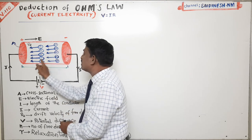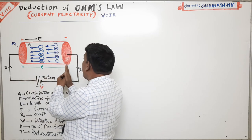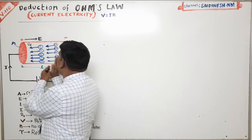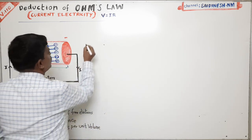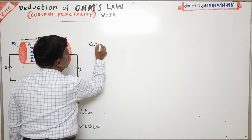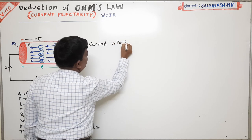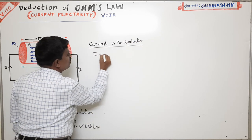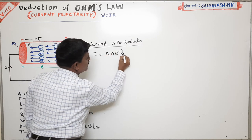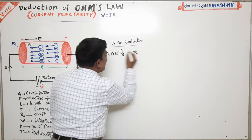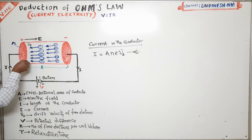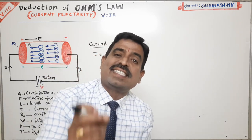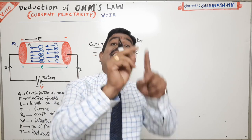These electrons are flowing from one end to the other. The rate of flow of charge we call current. Current is flowing in this conductor, given by the formula I equals A·n·e·Vd. In this formula, A represents the cross-sectional area of the conductor, and small n represents the number density of free electrons.